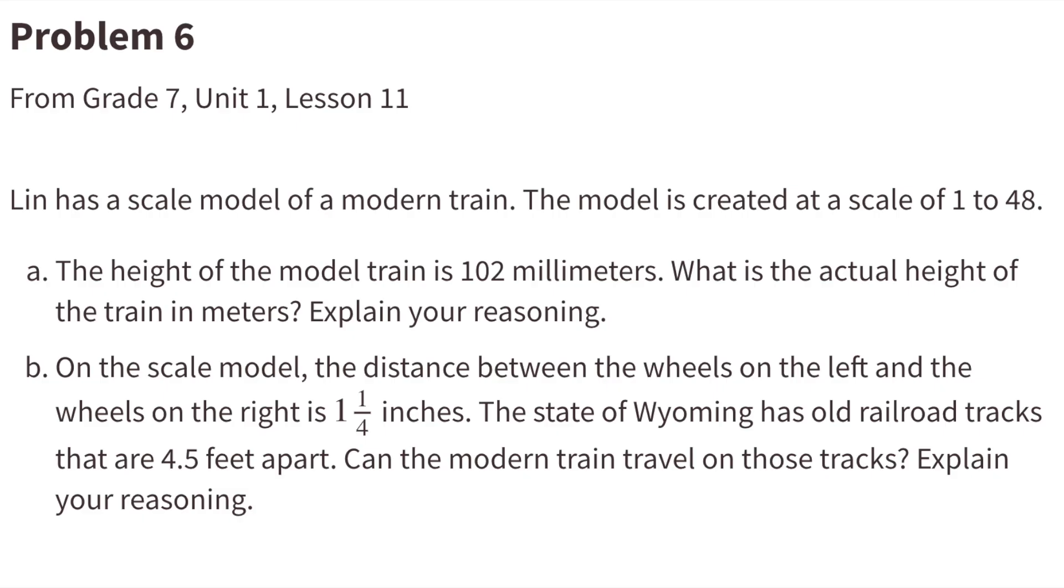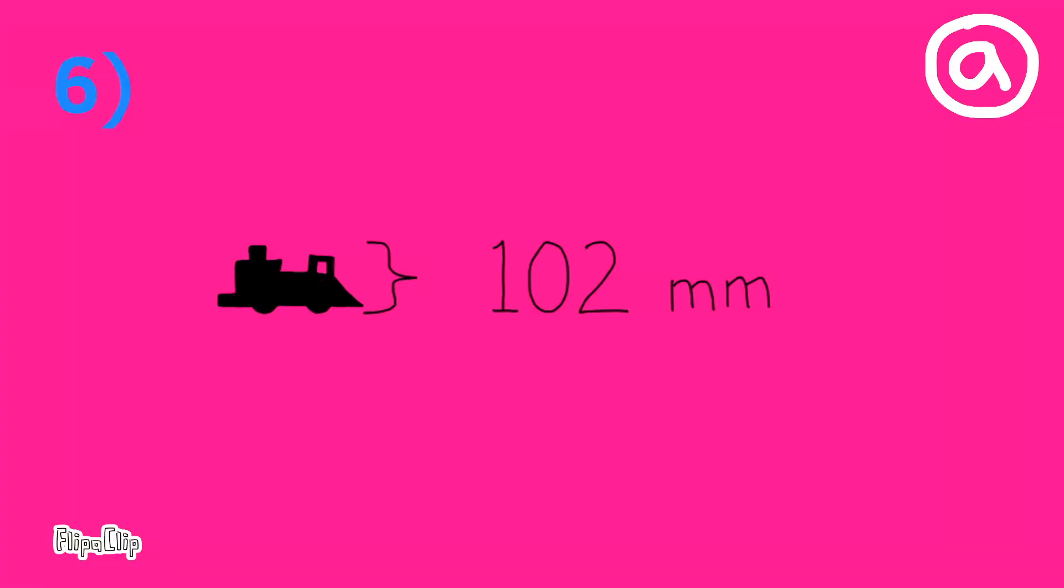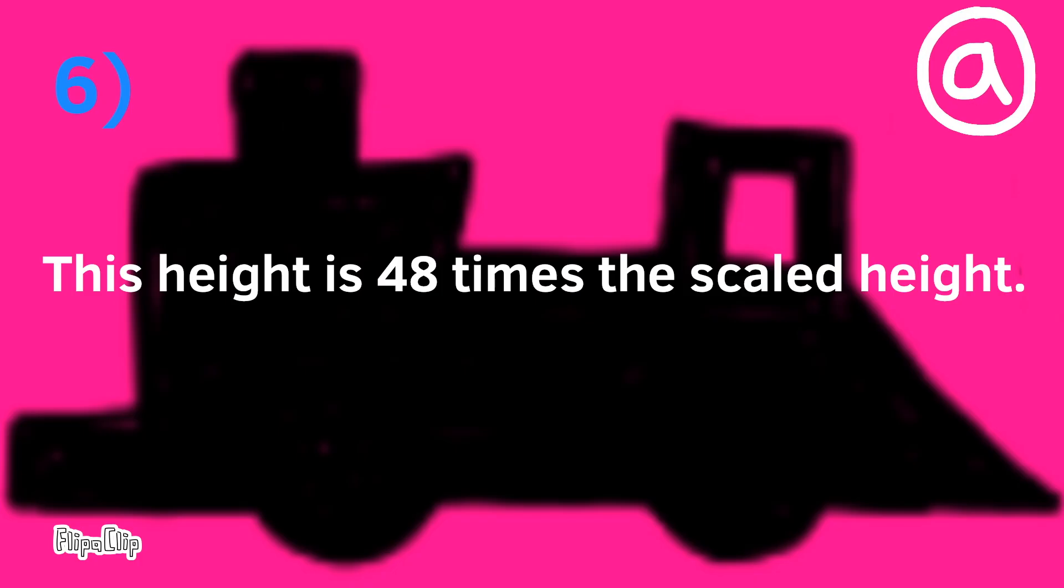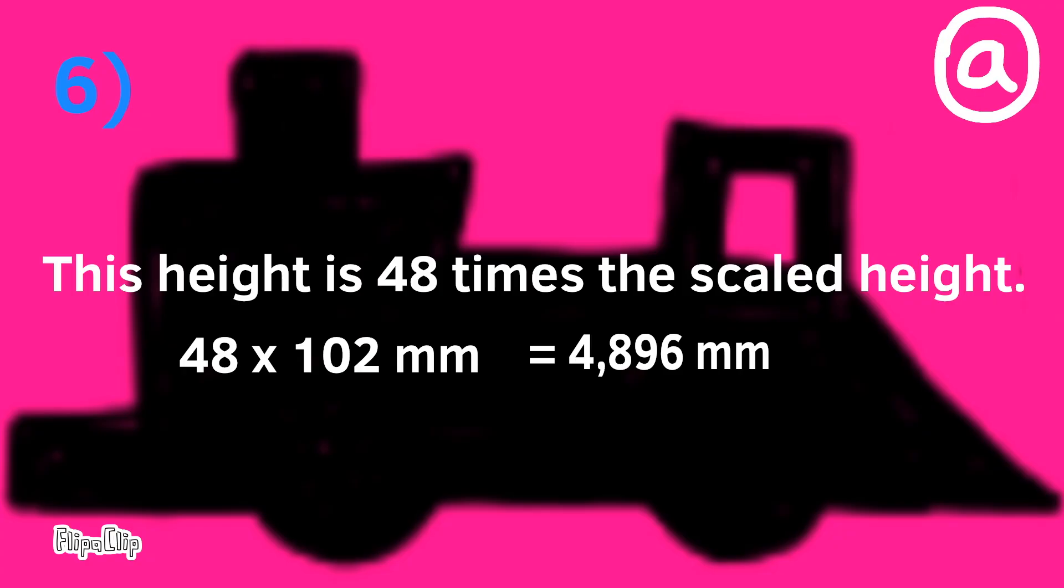Number 6: Lynn has a scale model of a modern train created at a scale of 1 to 48. Part a: The height of the model train is 102 millimeters. What is the actual height of the train in meters? The model train has a height of 102 millimeters. The actual train is 48 times the scaled height, or 48 times 102 millimeters. 48 times 102 equals 4,896 millimeters.